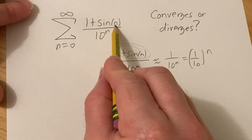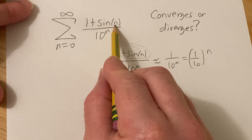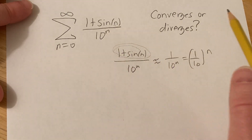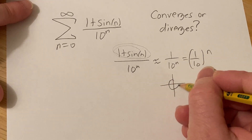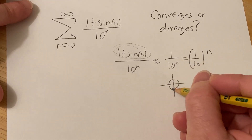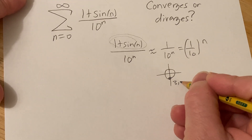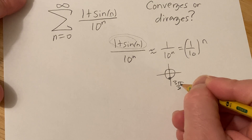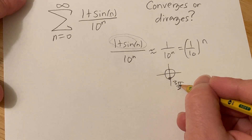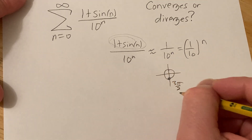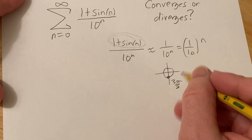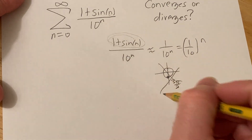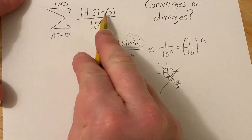Sine will never equal negative 1 here because the only time that happens is at 3π/2, or 3π/2 plus or minus multiples of 2π — and n is always an integer, so it never hits those values. So we don't have to worry about that; this will always be positive.